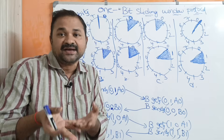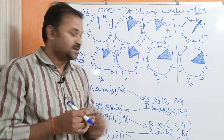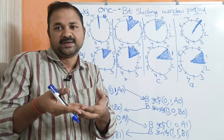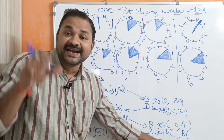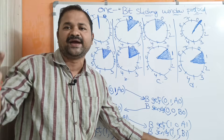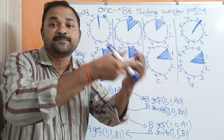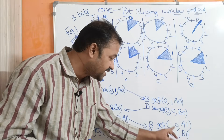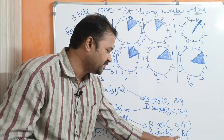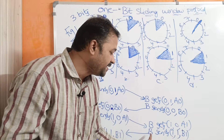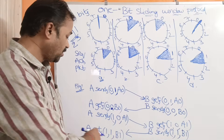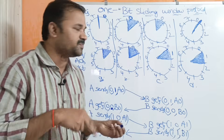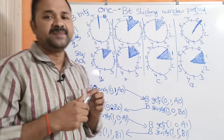A observes the acknowledgement number and knows that frame number 0 was correctly received. Now A can send the first frame. A sends (1, 0, A1) — sequence number 1, acknowledgement 0, packet A1. B receives this and sends acknowledgement for frame 1: B sends (1, 1, B1), and likewise the transmission continues from sender to receiver. This is the 1-bit sliding window protocol.